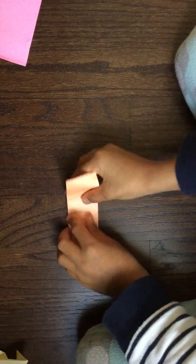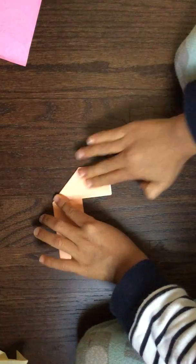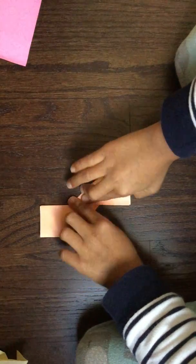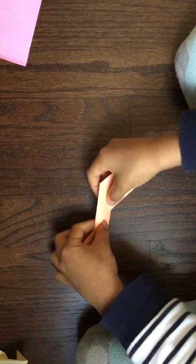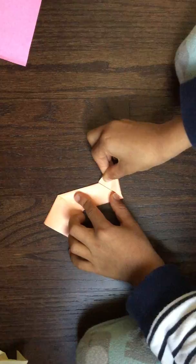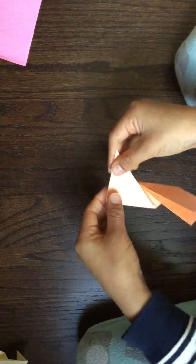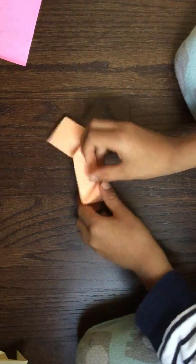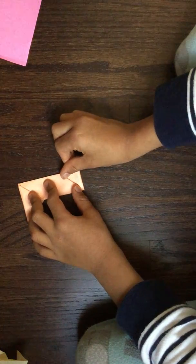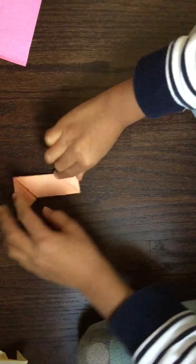Fold this side down and this side up, and then flip over, and fold that so a triangle while facing, and then fold the other side like this to the triangle.